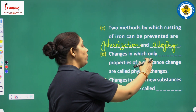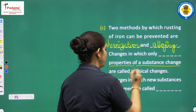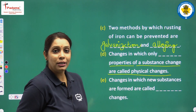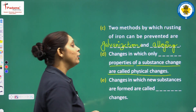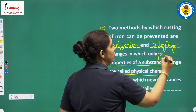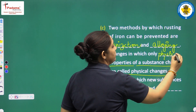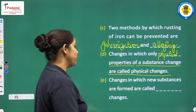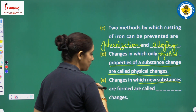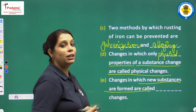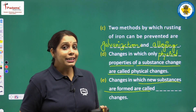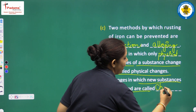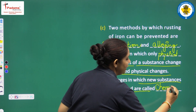Next blank: changes in which only physical properties of a substance may change — we will write here: physical. Next blank: changes in which new substances are formed — what type of change is that? It is chemical change. So we will write here: chemical change.